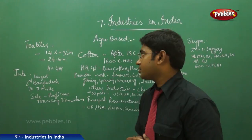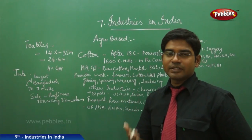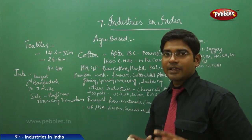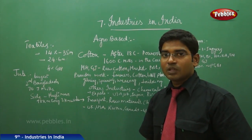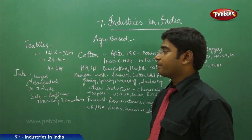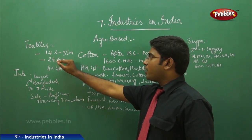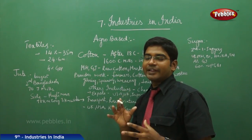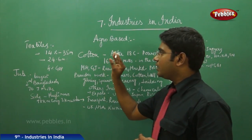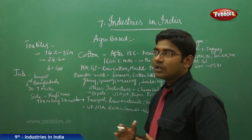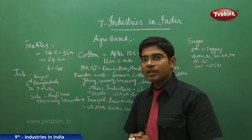In textile industries, whether it is cotton, jute, silk, or synthetic fiber, it contributes 14% of the entire revenue. Nearly 35 million people are in the textile industry, and 24.6% of people get employed in this sector. After agriculture, the largest number of people are employed in textile industries, and it contributes 4% of the gross domestic product to the Indian national revenue.